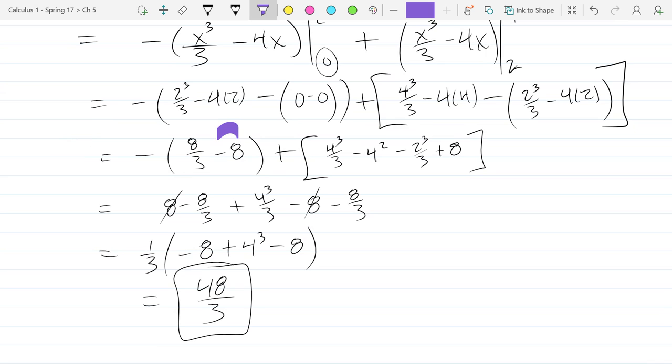So 8 minus 8 cancels. Everything is a third, so we'll factor that out. We got minus 8 plus 4 cubed minus 8, whatever that number is. So that's 64 minus 16, 48 maybe.